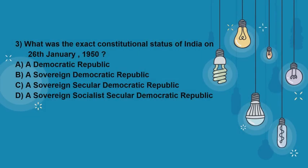Moving to the third question: What was the exact constitutional status of India on 26th January 1950? Again a direct question. As we all know, secular and socialist were originally not present in our preamble — they were added by the 42nd Constitutional Amendment Act 1976, which is also known as mini-constitution. So on 26th January 1950, India was a sovereign democratic republic. Hence Option B is correct: a sovereign democratic republic.